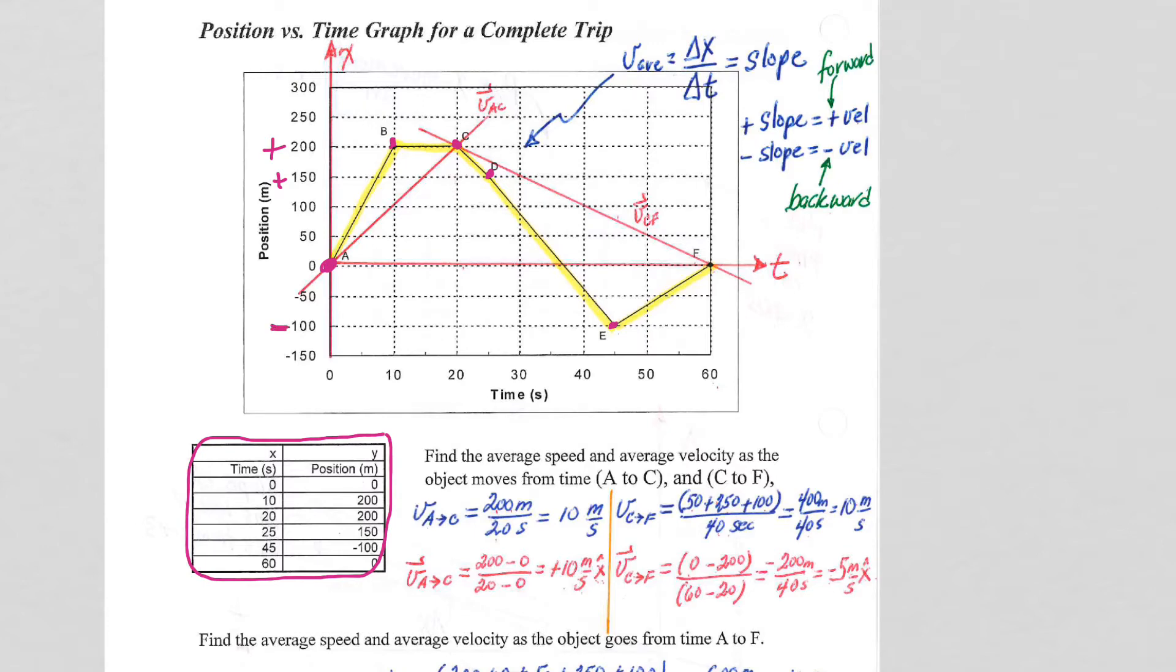And then finally back to our origin, back home to position 0, 0. So this data is just our position versus time graph.